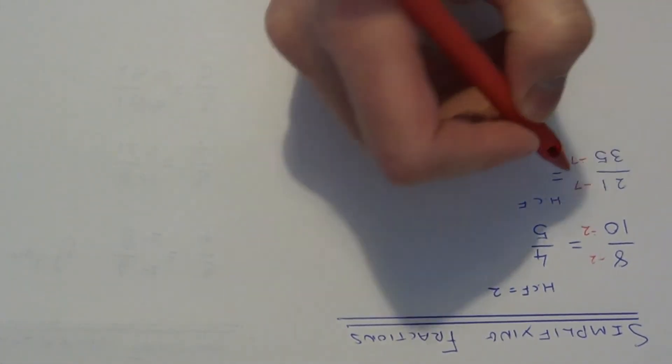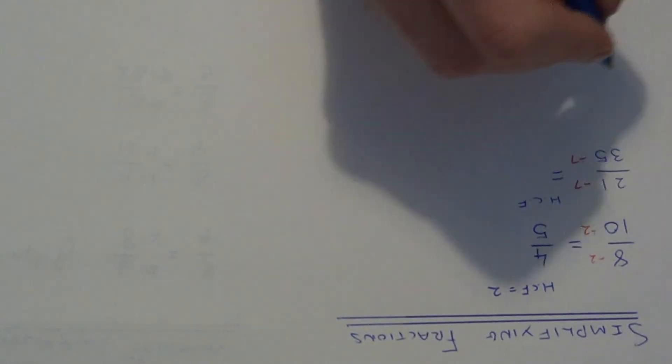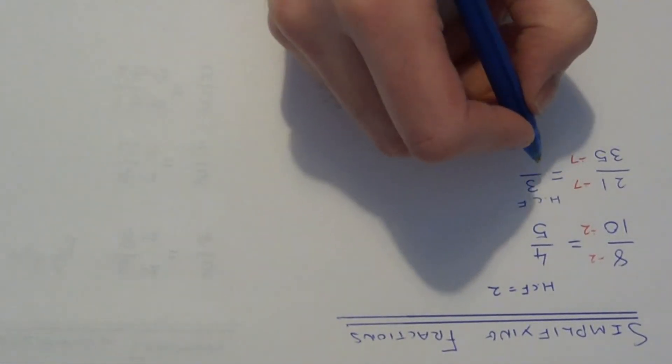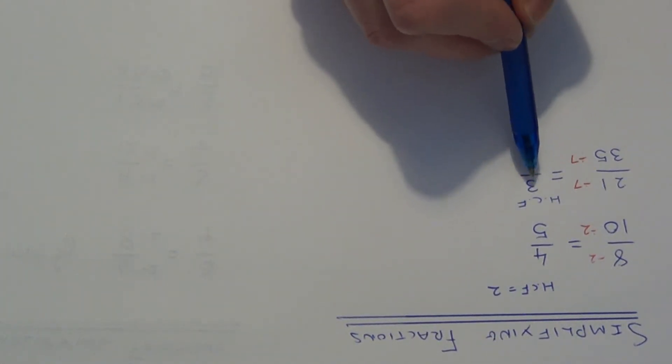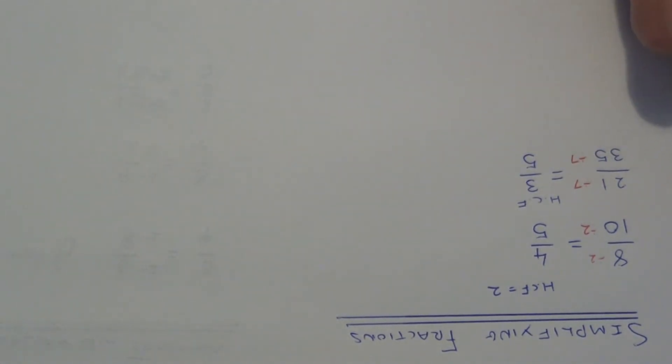So 21 divided by 7 is 3. 35 divided by 7 is 5. So we get 21 over 35 is equal to 3 fifths. So that's an equivalent fraction.